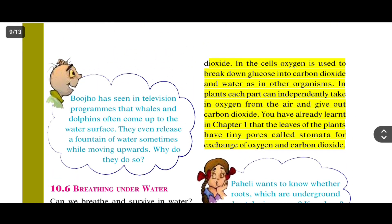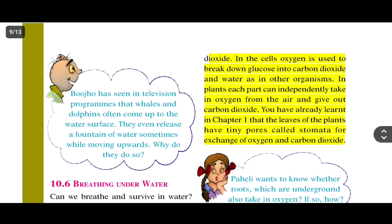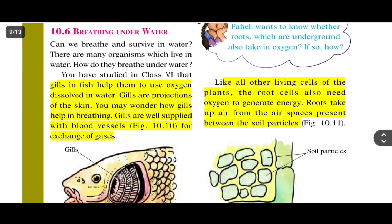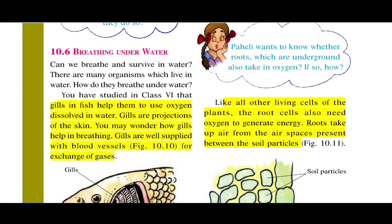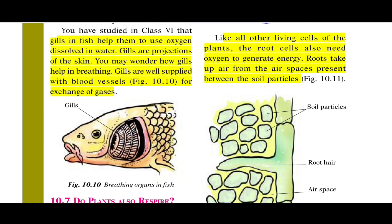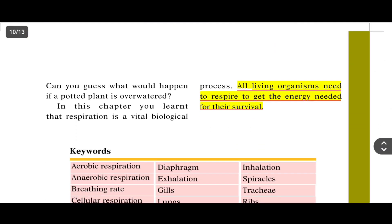In plants, each part can independently take in oxygen from the air and give out carbon dioxide. Plants have tiny pores through which exchange of oxygen and carbon dioxide takes place. Root cells also need oxygen to generate energy. Roots take up air from the air spaces present between the soil particles.